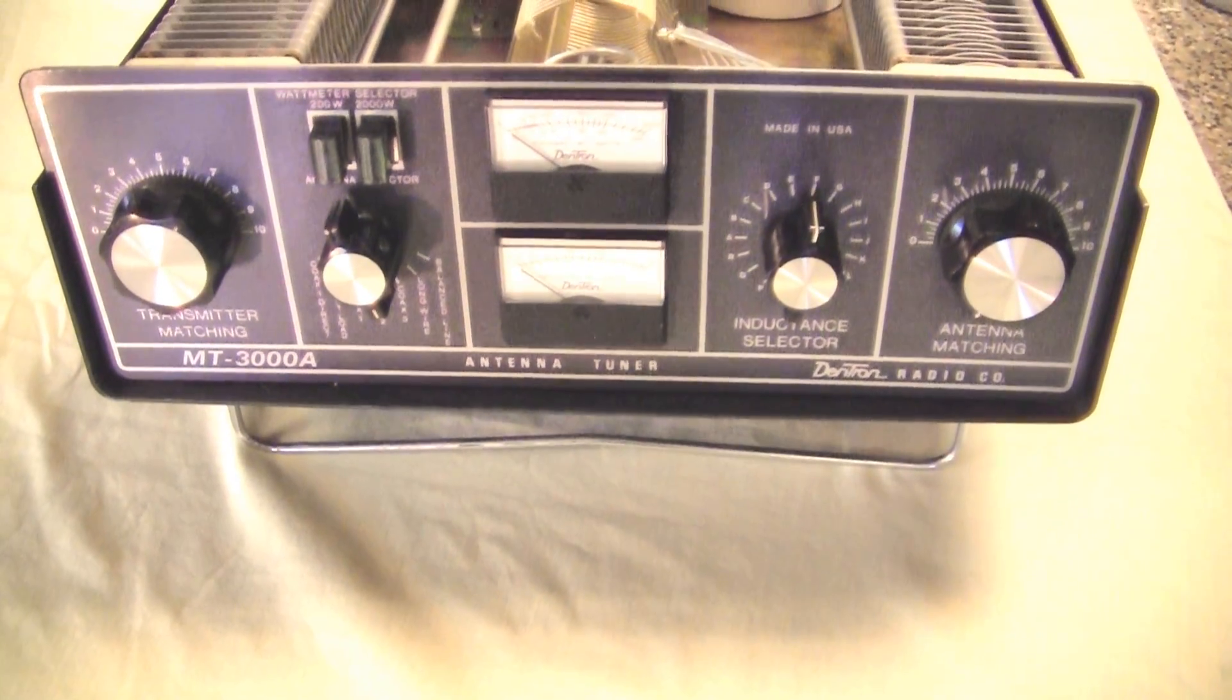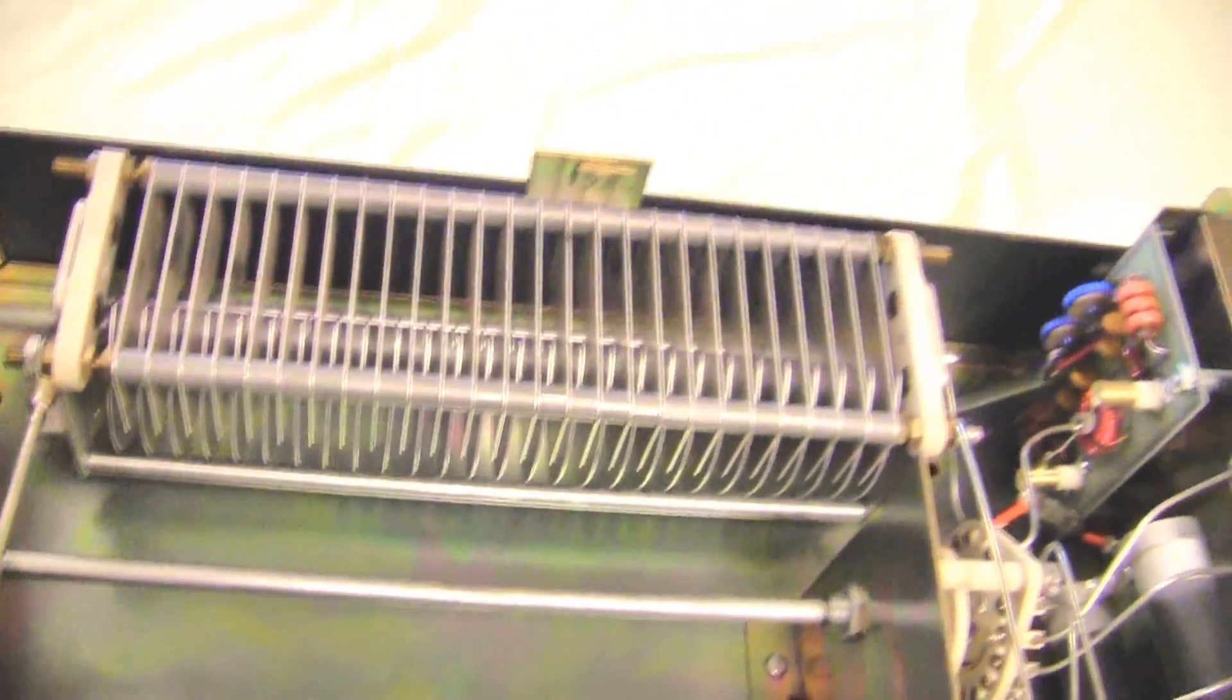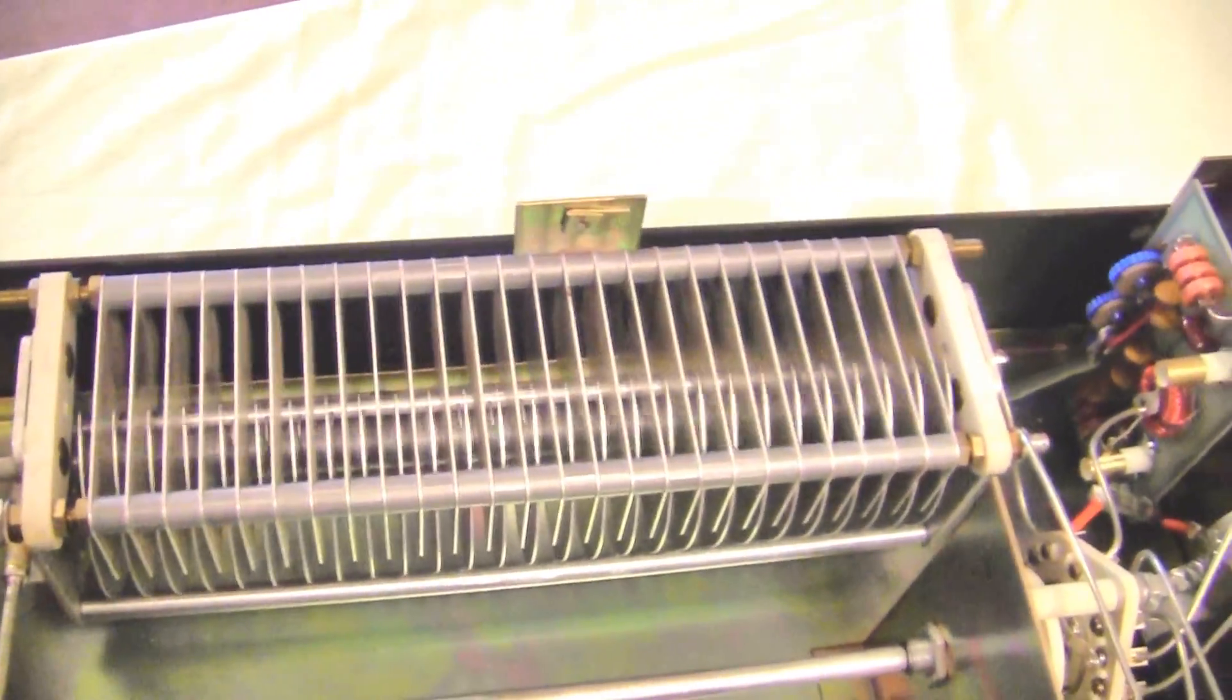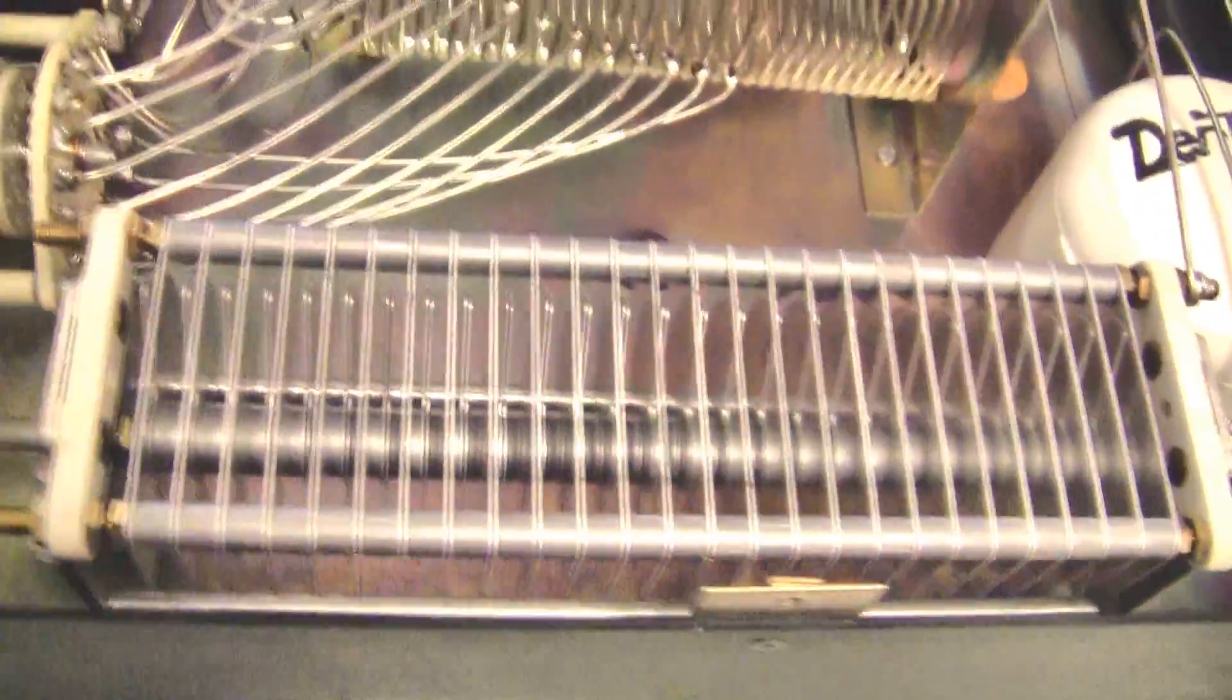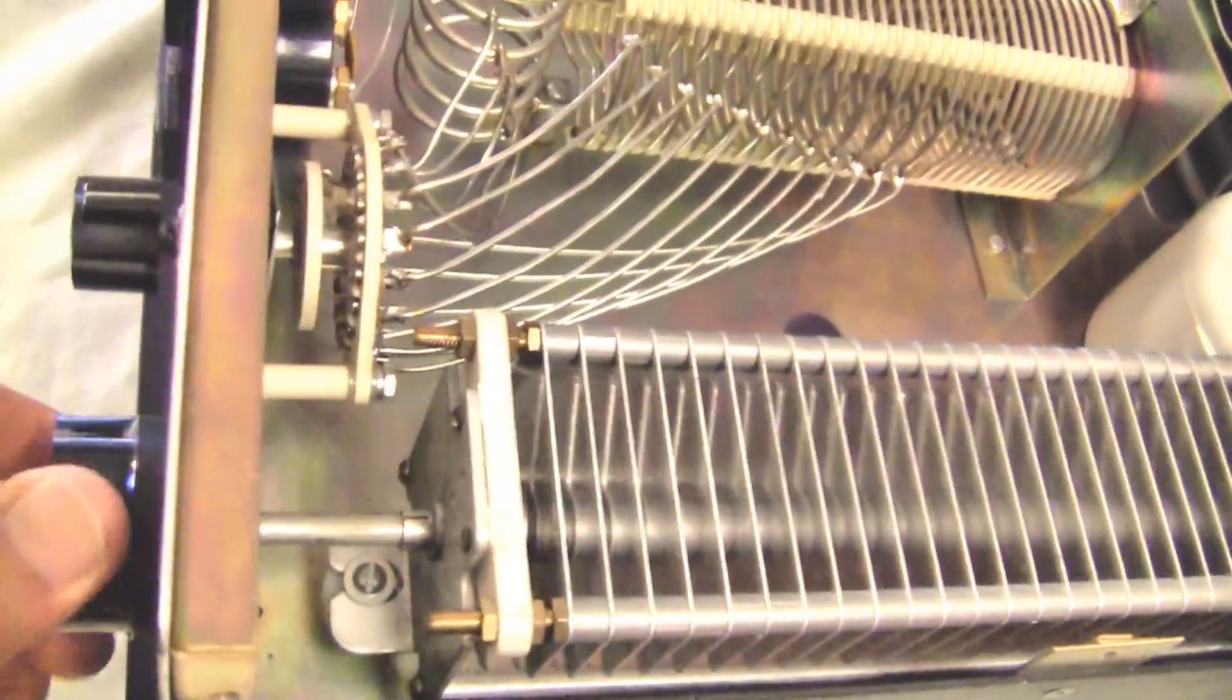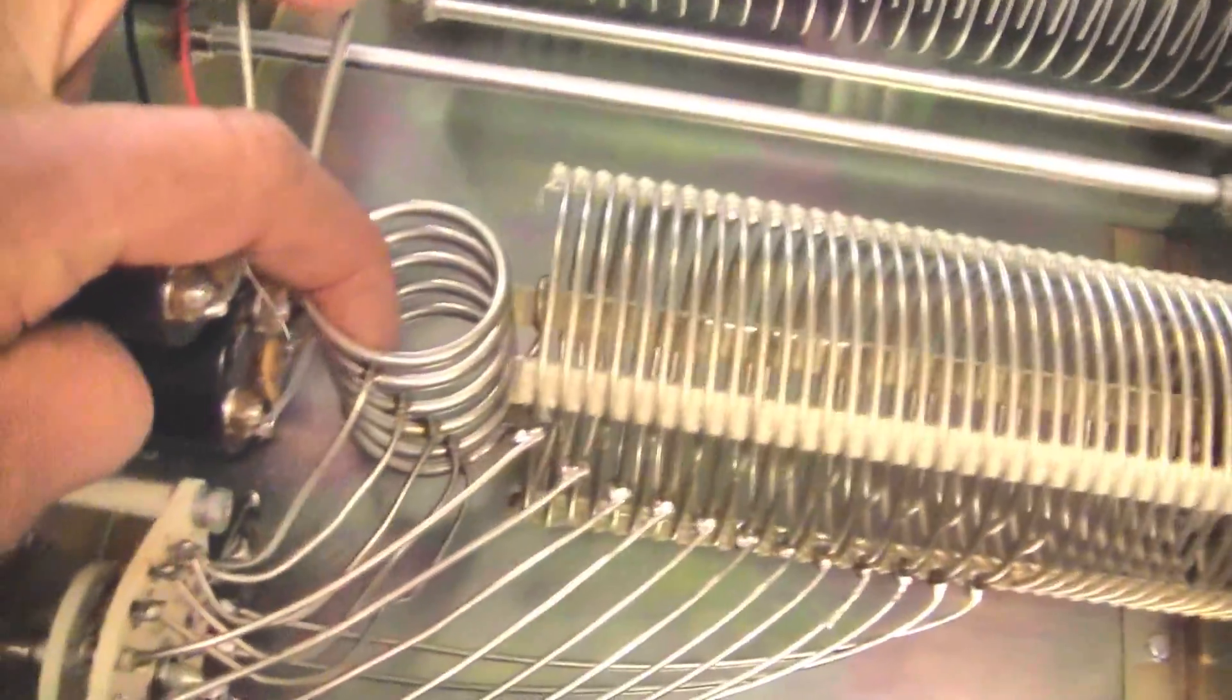Let's take a look inside at the components of this Dentron 3-kilowatt antenna tuner. They're pretty standard. This is a standard T-tuner. I've got a video here that tells how T-tuners work. Here's the transmitter capacitor. Remember the T-tuner has two capacitors, an inductor. Here's the second capacitor. Nice big heavy capacitors with good plate spacing and a calibrated front panel knob.